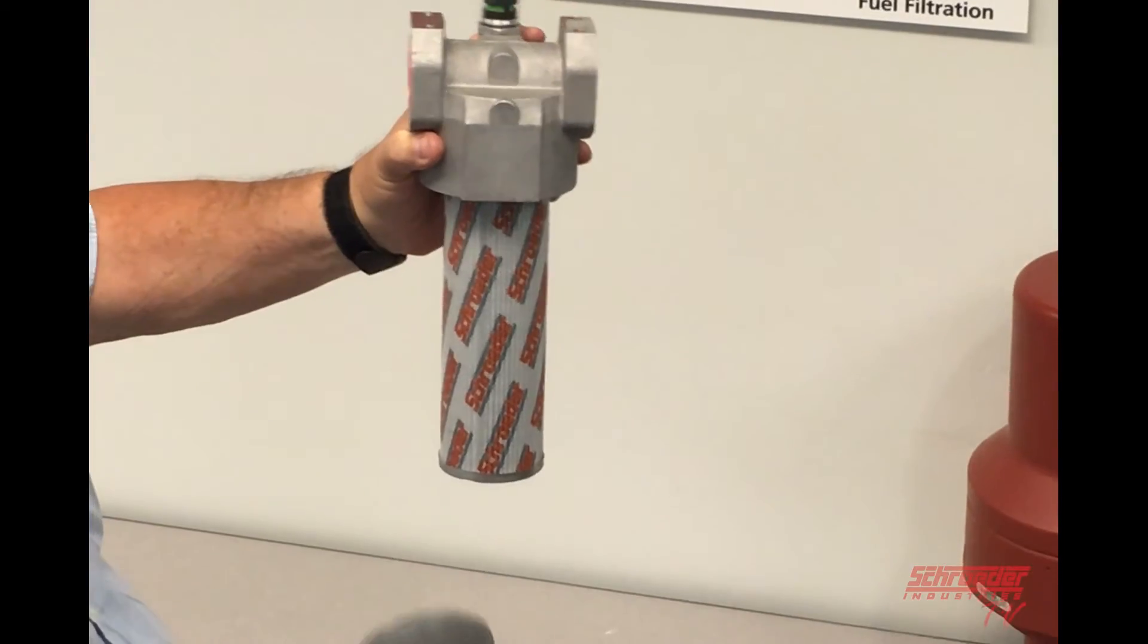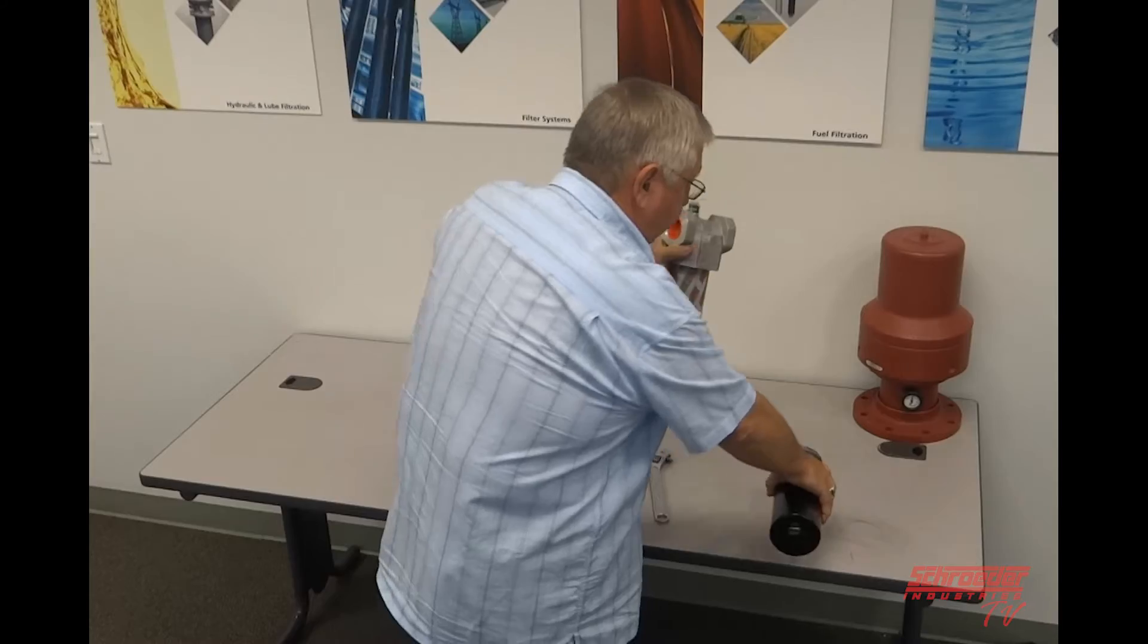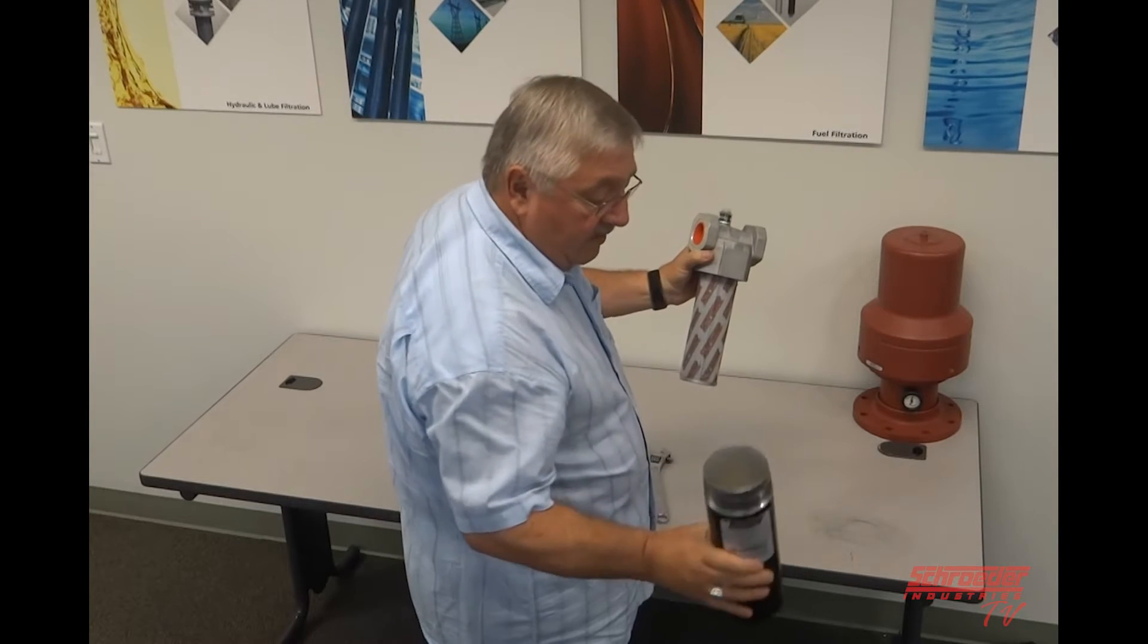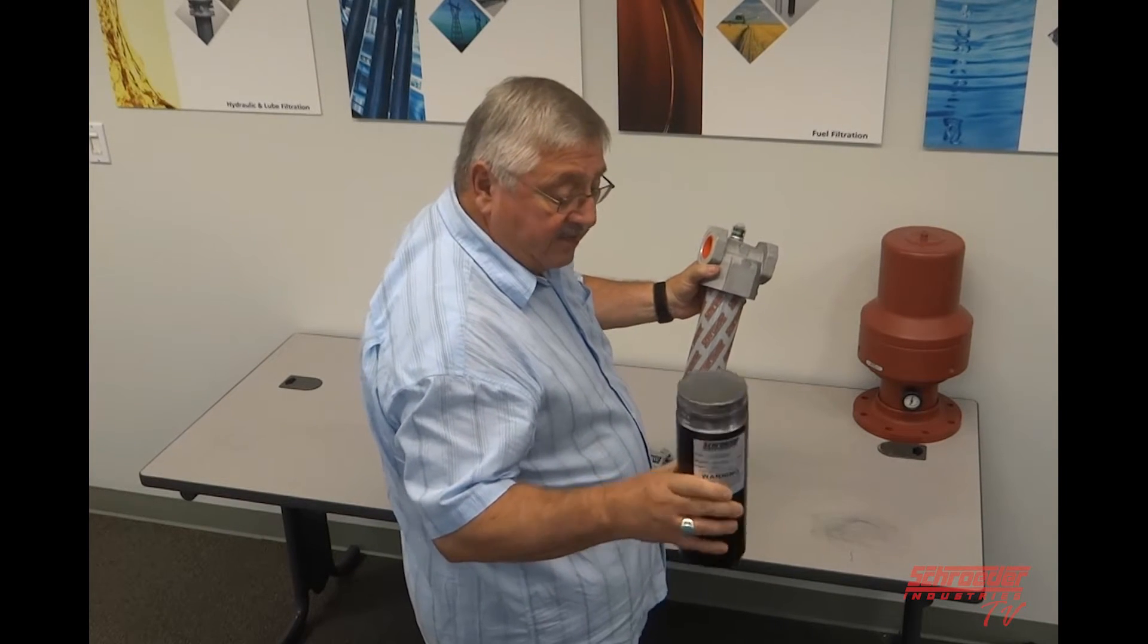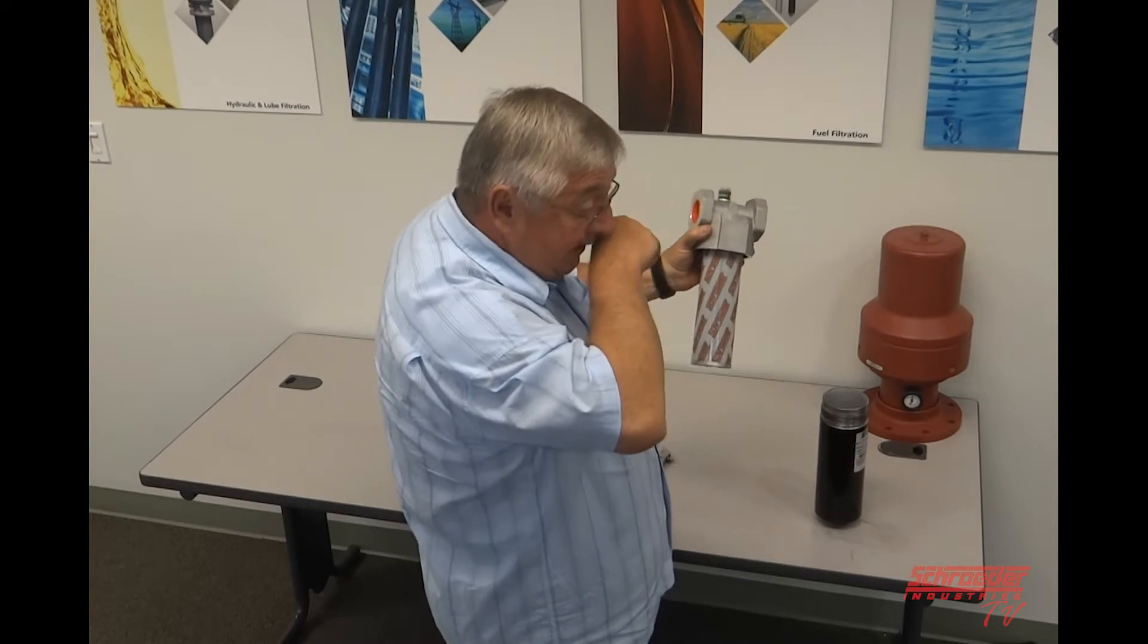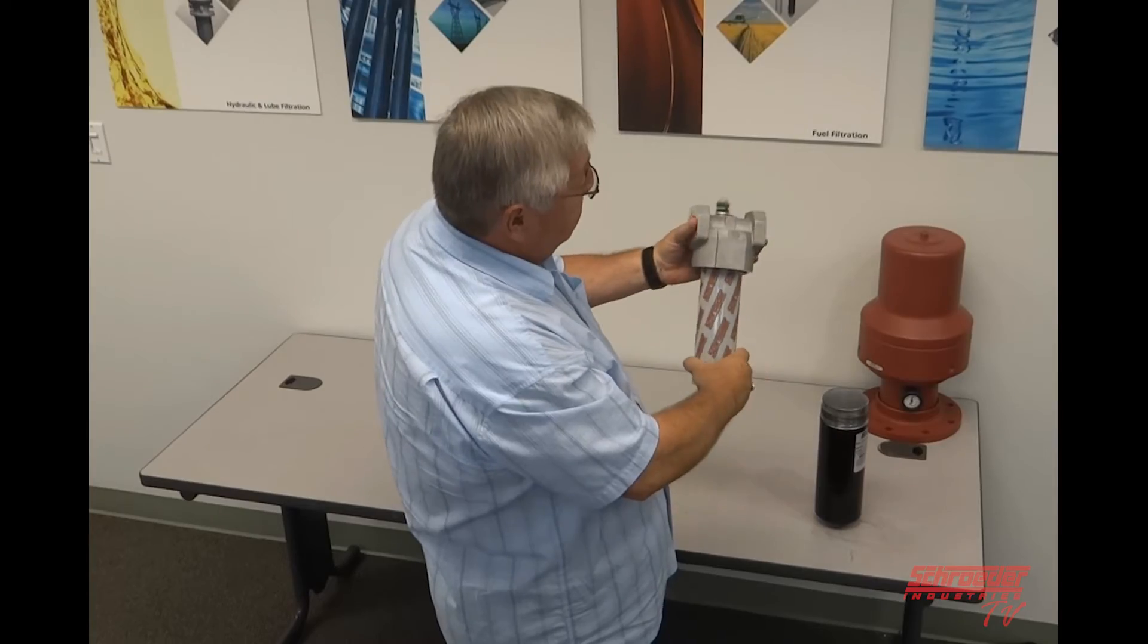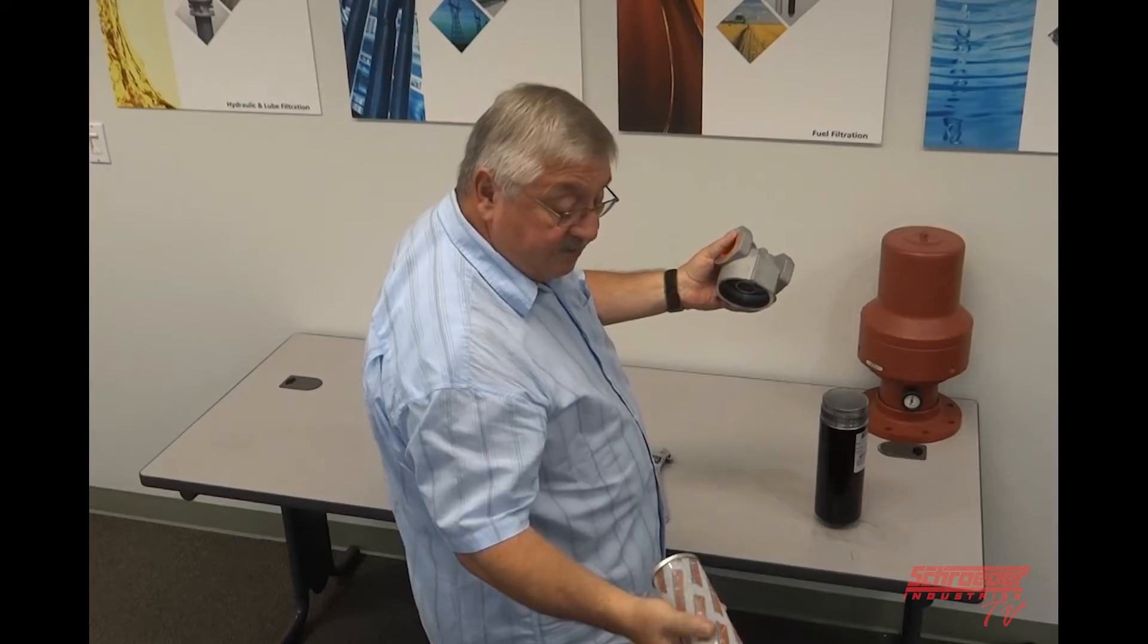Pull it down. You've got an element that's got oil in it. Hopefully you got a pan under it. Clean out your bowl. Dump all the oil out or whatever's in here. Some of them have drains on the bottom. That's a specialty item. But clean out the bowl with a nice clean rag and some cleaning fluid. Pull your old element off. Dispose of the element.